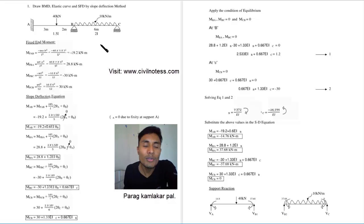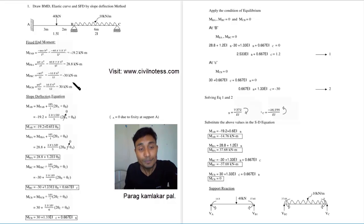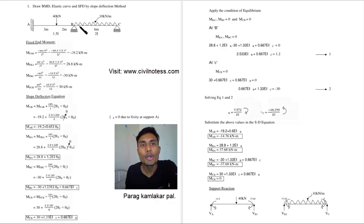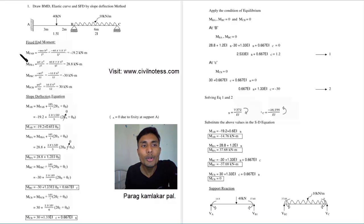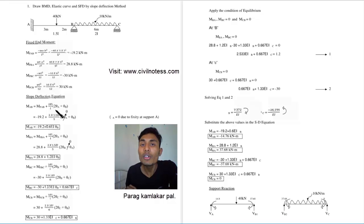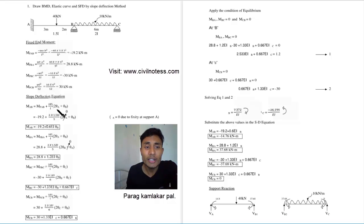After getting all fixed end moment values, we apply the slope deflection equations to form moment equations. Four equations can be formed: moment AB, moment BA, moment BC, and moment CB. The slope deflection equation for moment AB is: M_AB = FEM_AB + (2EI/L)(2θ_A + θ_B). Since support A is fixed, θ_A equals zero. So the equation simplifies and we get a numerical expression like minus 19.2 plus 0.6EI·θ_B.